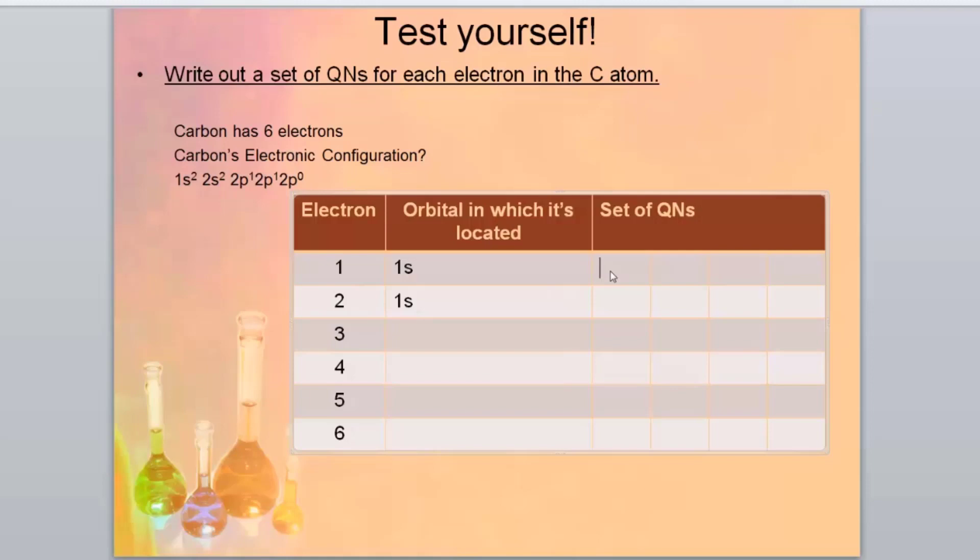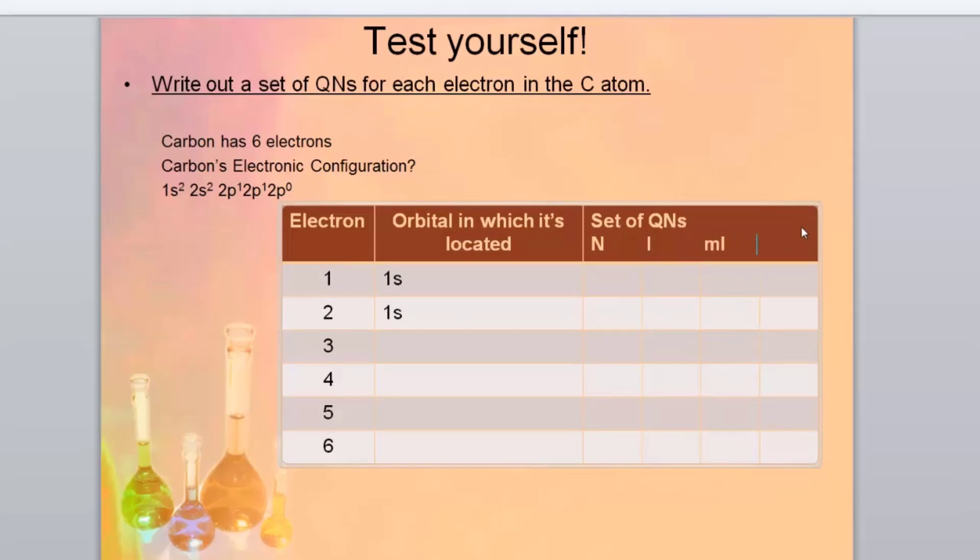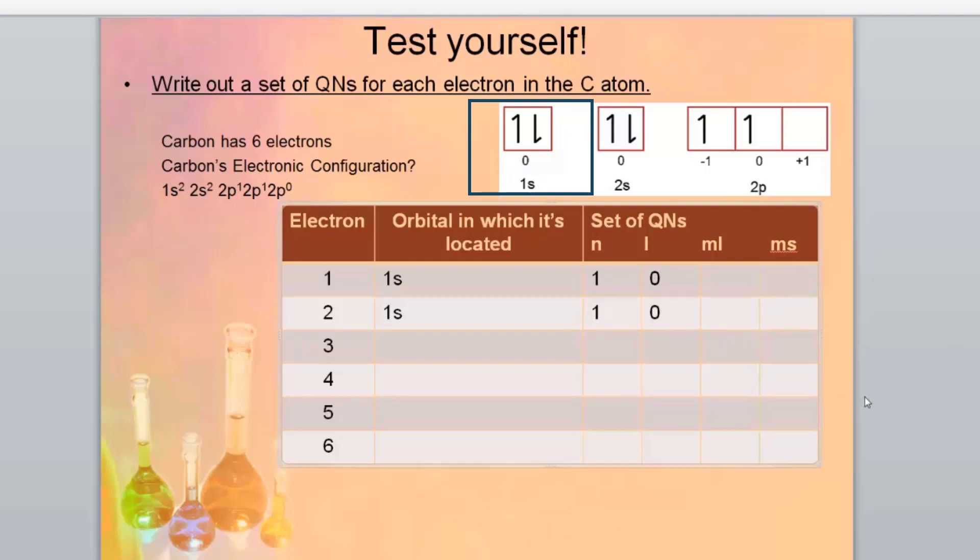So we've got our n value, and then we've got our l and then we've got our ml and our ms. So the n value, it's in the first energy level. What orbital is it? It is an s orbital, so it's a zero. The ml is minus l to zero to plus l, so for this case it would be zero again.